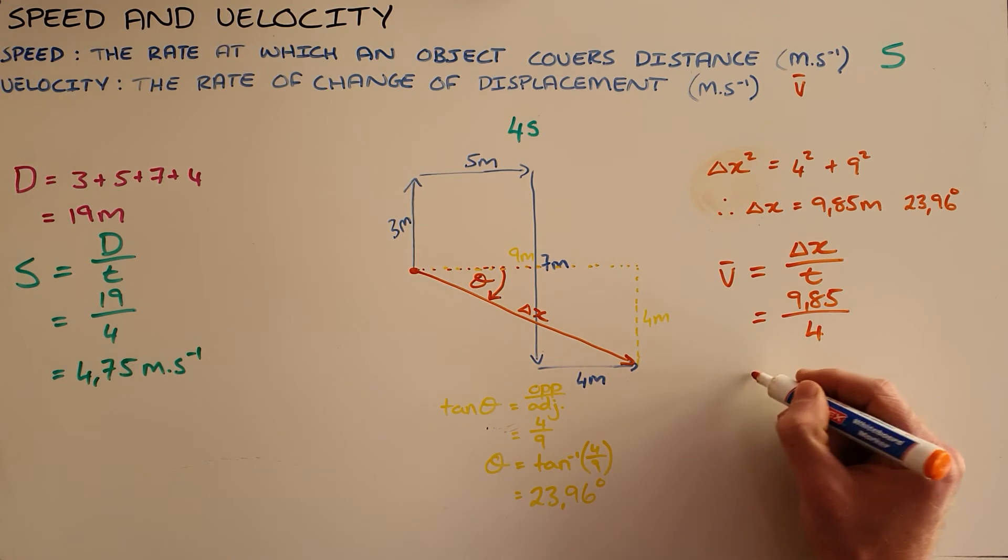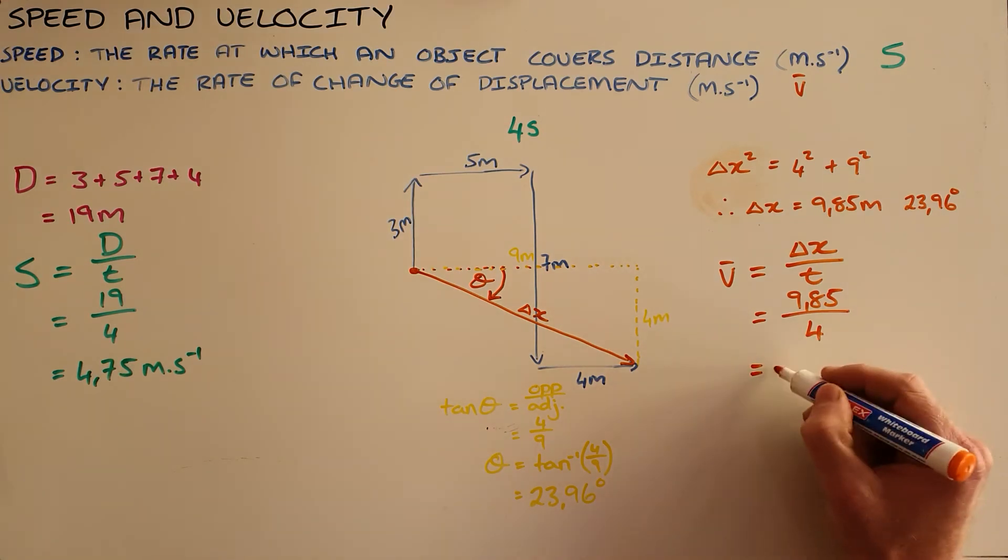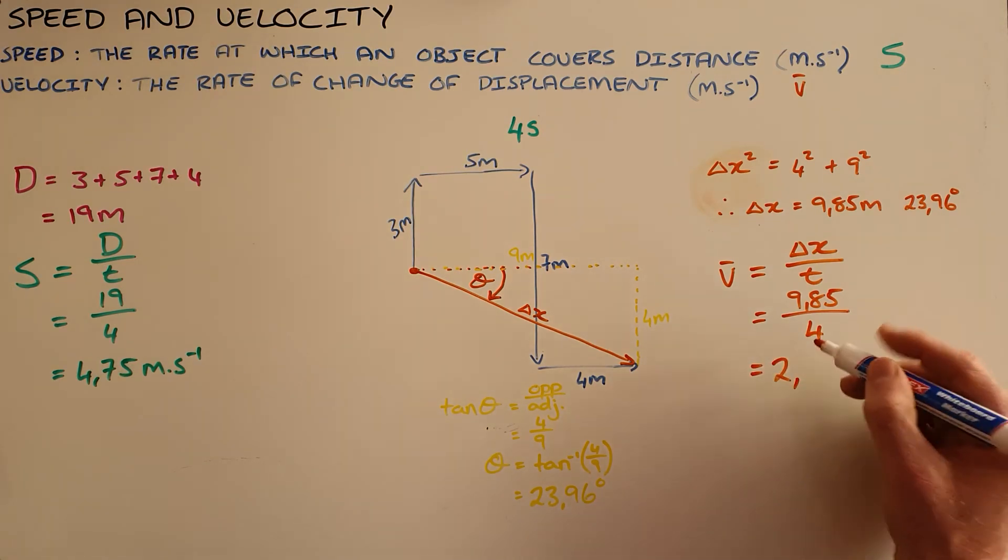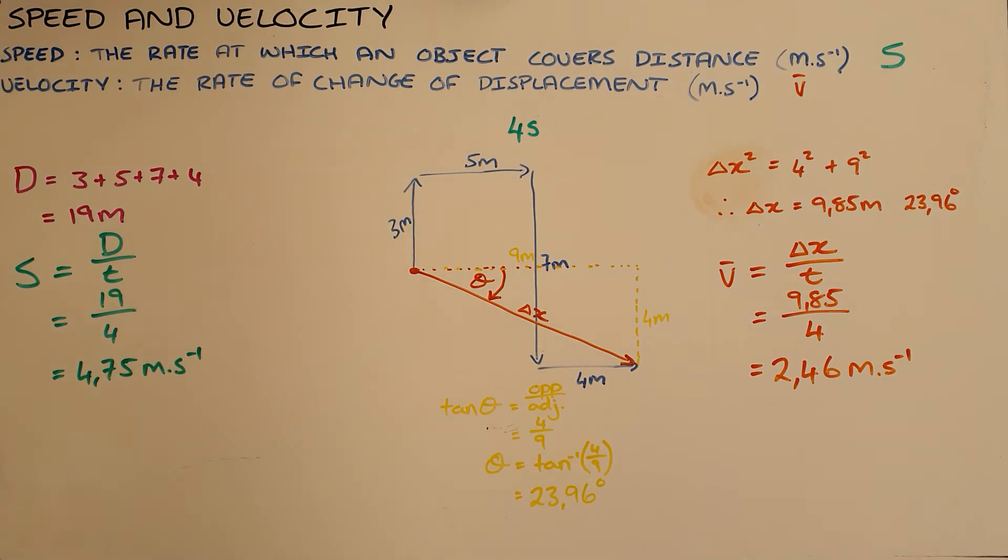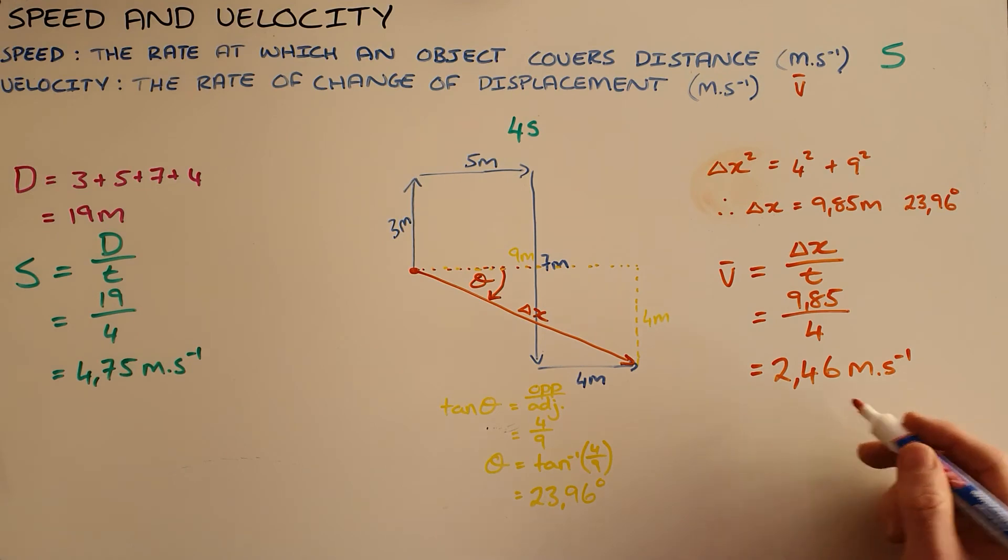This means that the velocity of this object is very different to its speed. The velocity is 2.46 meters per second. It is important to remember that velocity is a vector quantity and therefore must have direction.